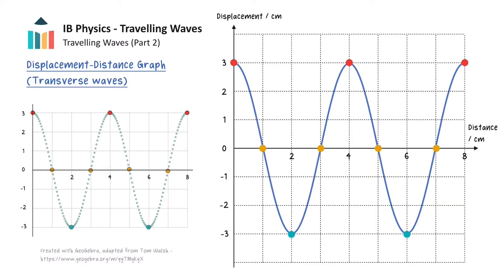We can find the wavelength of the wave from this graph, which is the distance between two adjacent points that are in phase, giving us a value of 4cm. We can also determine the amplitude of the wave from this graph, giving us a value of 3cm. However, we can't find out any information about the frequency or the period for the wave, because those are dependent upon time.